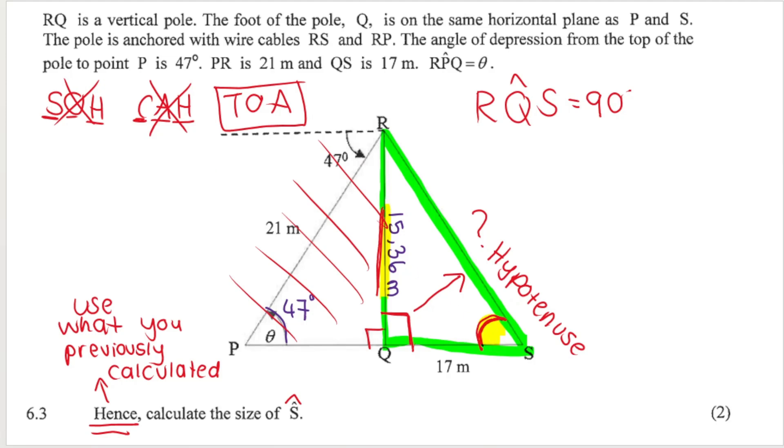Tan is opposite. Do I have the opposite? Yes, the opposite is 15.36 over adjacent. This is the adjacent, 17. So I'm going to use tan of S. Remember it's always the trig ratio tan of an angle. Cos of an angle, sin of an angle.